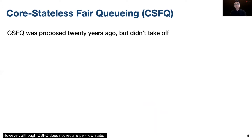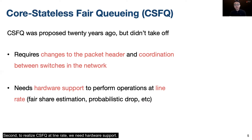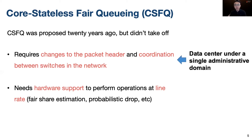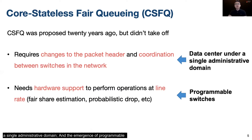However, although CSFQ does not require per-flow state, it did not take off. There are mainly two reasons. First, CSFQ requires changes to the packet header and coordination between switches in the network. Second, to realize CSFQ at line rate, we need hardware support. Fortunately, two emerging technologies are making CSFQ relevant again. The widely used data center provides a place for CSFQ to deploy under a single administrative domain, and the emergence of programmable switches makes it possible to implement user-defined packet processing at line rate.